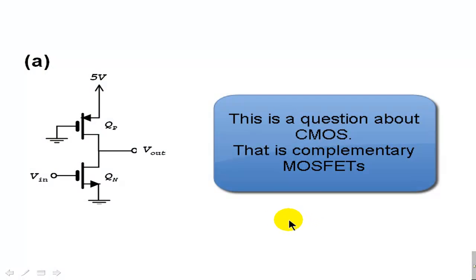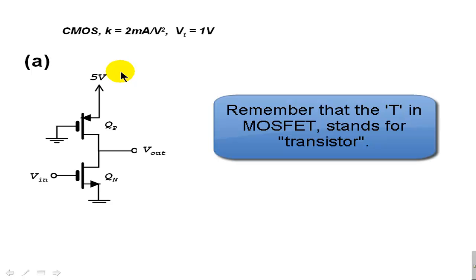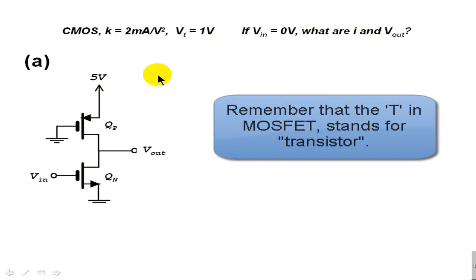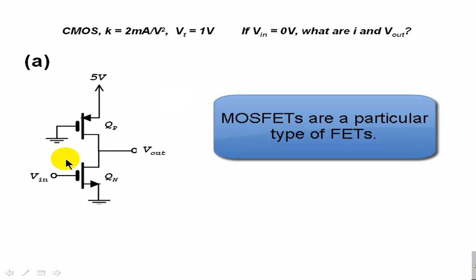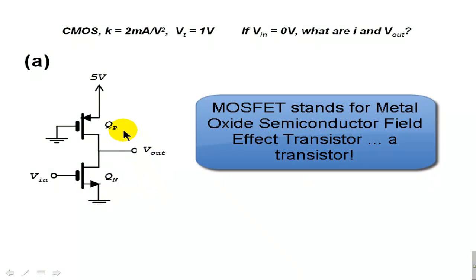This is question 6 of the final exam. There is a CMOS pair. The K is given, the VT is given, 5 volts are applied up here, and the input is different for each one of the three parts of the question. For part A, we apply 0 volts as input, and we need to compute what is the output voltage and what is the current flowing through the drain-source paths of both transistors — a P transistor and an N transistor.